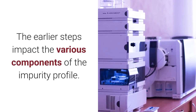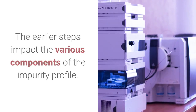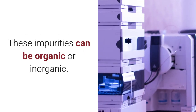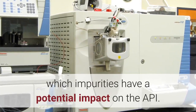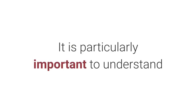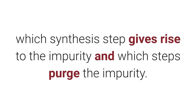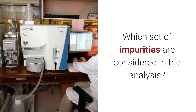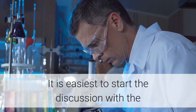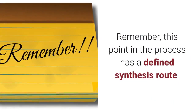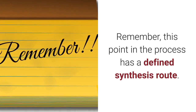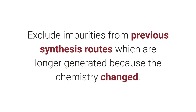The earlier steps impact the various components of the impurity profile; these impurities can be organic or inorganic. The main goal of the risk assessment process is to identify which impurities have a potential impact on the API. It is particularly important to understand which synthesis step gives rise to the impurity and which steps purge the impurity. It is easiest to start the discussion with the set of impurities excluded from the analysis. At this point in the process there is a defined synthesis route.